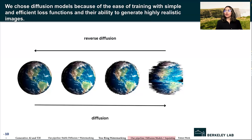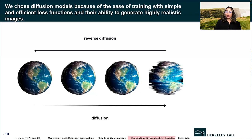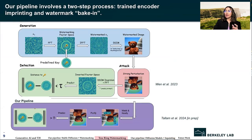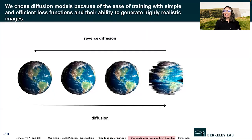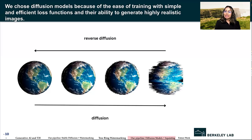We chose diffusion models because of the ease of training with simple and efficient loss functions and their ability to generate highly realistic images. This approach can convert an array of Gaussian noise into a clean image. We choose the initial noise array so that its Fourier transform contains a carefully constructed pattern near its center — that pattern is called the key, shown here. This initial noise vector is then converted into an image using the standard diffusion pipeline with no modifications. To detect the watermark, the diffusion model is inverted to retrieve the original noise array, which is checked to see whether the key is present. Rather than imprinting the key into the Gaussian array directly — which could cause noticeable patterns in the resulting image, something we are still exploring — we imprint the key into the Fourier transform of the starting noise vector.